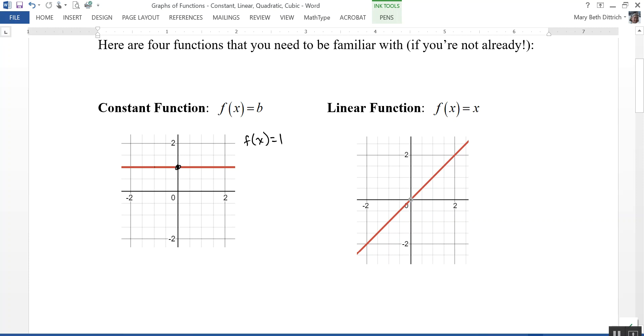So my points are going to be 0, 0, 1, 1, 2, 2, negative 1, negative 1, negative 2, negative 2. Identical identity function.